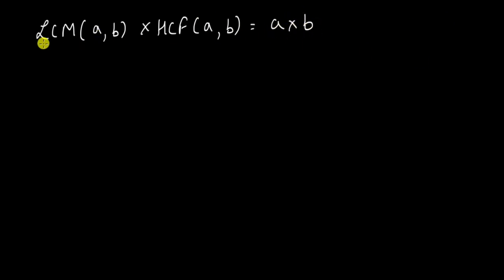So if we have two numbers A and B, we take their LCM, we take their HCF, we multiply these two, it will be the same as the multiplication or the product of the two numbers themselves A and B.